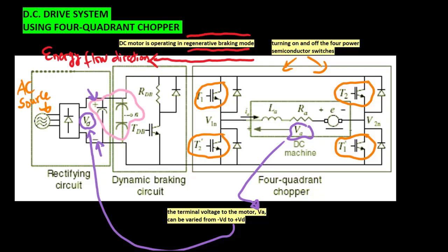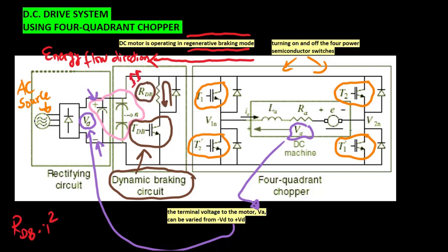To prevent overvoltage of the DC link, a discharging switch implemented by a power semiconductor turns on and the regenerated energy is dissipated at a resistor Rdb as heat. This kind of braking energy absorbing method is called dynamic braking. Through the four-quadrant chopper circuit, the current regulation bandwidth can be easily extended up to several thousand radians per second.